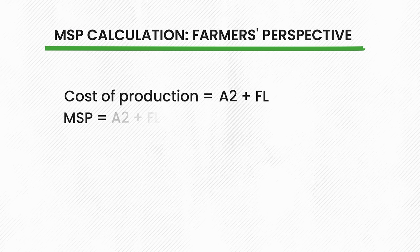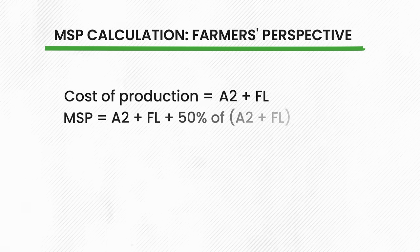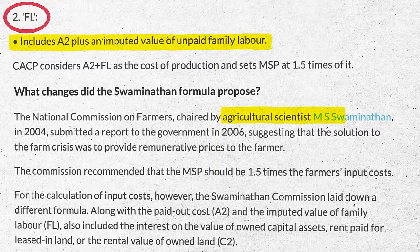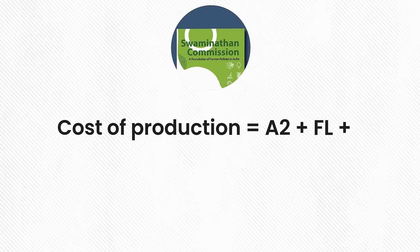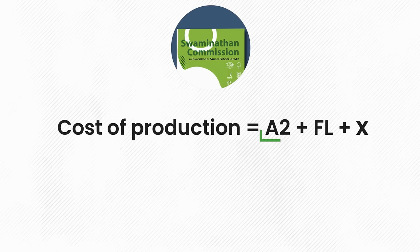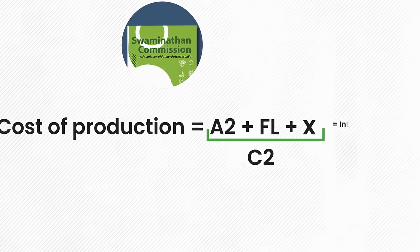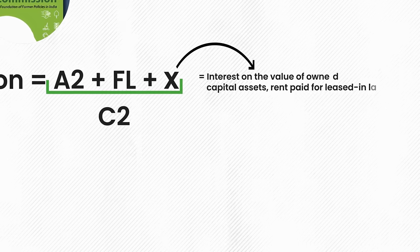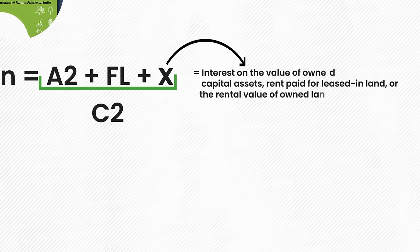The CACP takes the total of A2 and FL and calls it the cost of production. Then the MSP is set at A2 + FL + 50% of (A2 + FL). Now let's understand how the farmers propose the MSP should be calculated today. The farmers want it calculated according to the Swaminathan Commission report. In that report, along with A2 and FL, the cost of production variable also includes another parameter X to create a variable called C2. This X is supposed to be the interest on the value of owned capital assets, plus rent paid for leased-in land or the rental value of owned land.